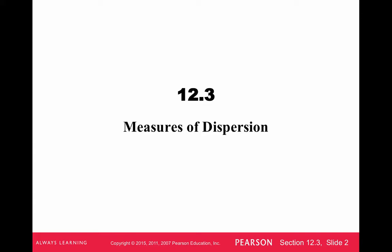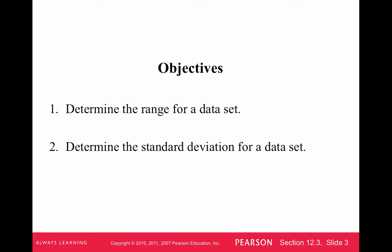But another main way to describe numerical data is to look at the measures of spread, how spread out the data is. Is it very closely clustered together, or is it very spread out? So we have measures of dispersion that tell us how spread out a data set is. The two measures that we're going to find are called the range and the standard deviation.